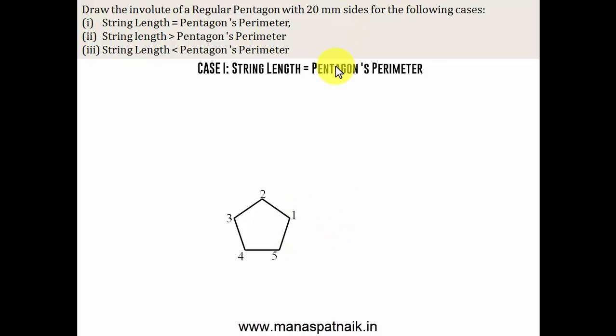Now, we have a string whose length is going to be equal to pentagon's perimeter. How much is the perimeter? All these sides are 20mm each. So, there are five sides. 20 into 5 is 100. Therefore, the perimeter is 100mm. So, we'll have a string with length of 100mm, one end of which is fixed at 5, while the other end is at a distance of 100mm from this point 5 on the pentagon. That's the string length equivalent to the pentagon's perimeter.